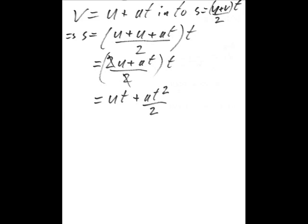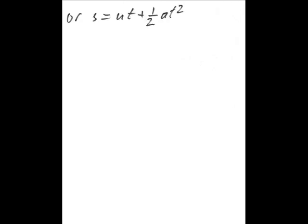rearranging them gives us a formula for displacement of being equal to the initial velocity multiplied by the time taken plus half the acceleration multiplied by the time taken squared. This equation omits final velocity.